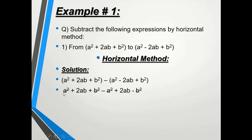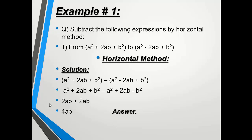The a² with a positive sign and the a² with a negative sign cancel each other. Similarly, the two b² terms with different signs also cancel each other. The two 2ab terms have the same sign, so 2ab + 2ab = 4ab. We just add the coefficients — we don't add the powers, as that belongs to multiplication. So our final answer is 4ab.